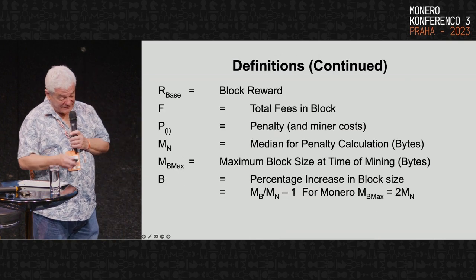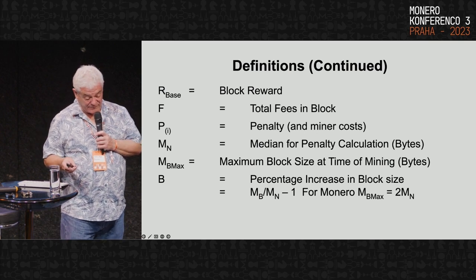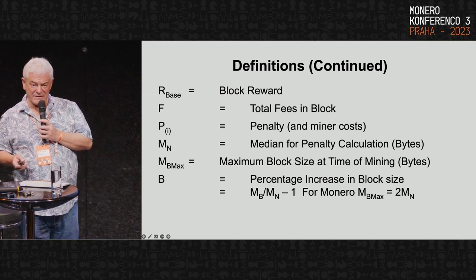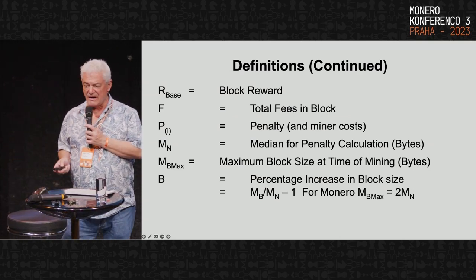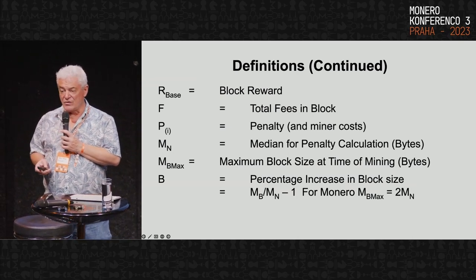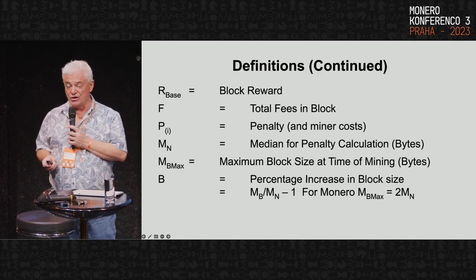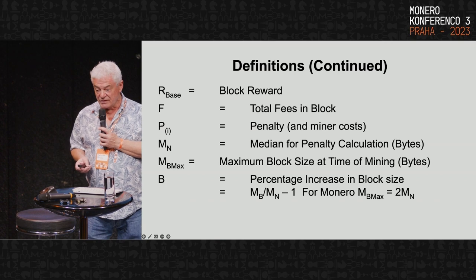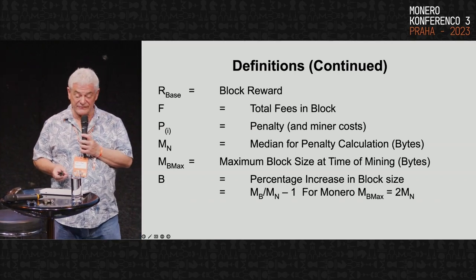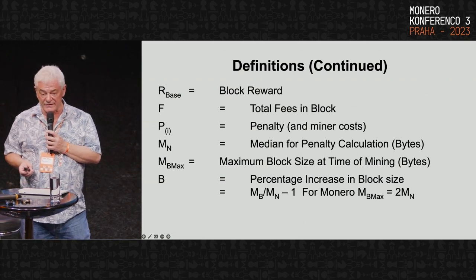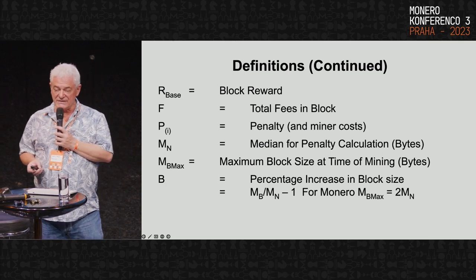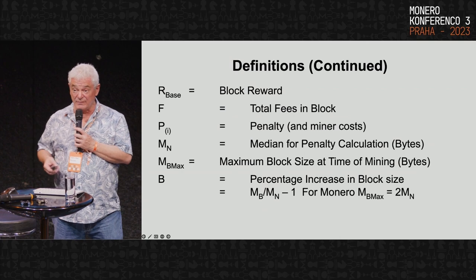R base is the block reward. F is the total fees in a block. Then you may have a miner penalty and miner costs. Miner costs — we don't usually talk about them, but there is some literature on the subject. What it means is that a miner would incur costs due, for example, to orphan blocks. One article from about 2015 by Peter Rizun had a theory on this: you get a second penalty term based on the probability of orphan blocks.